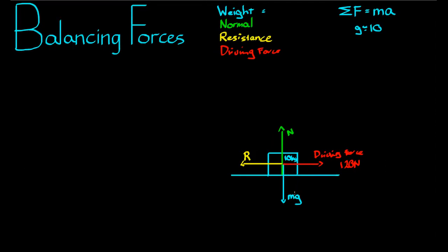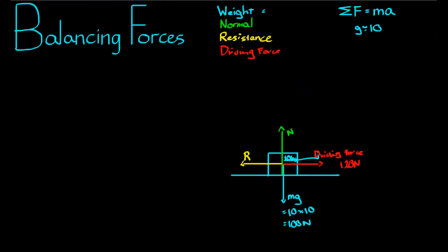First, the weight force is equal to mg. We have the mass, so the weight force equals m × g = 10 × 10 = 100 newtons. Now for the resistance force: the object is not accelerating to the right nor to the left. The normal force and weight force don't act left or right — they act purely vertically. So the only forces acting left and right are the driving force and the resistance force.